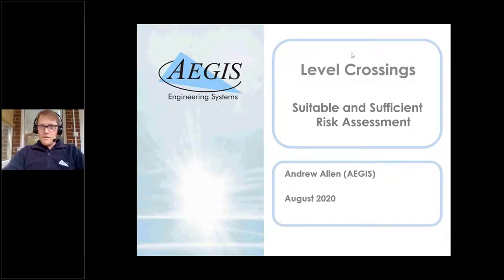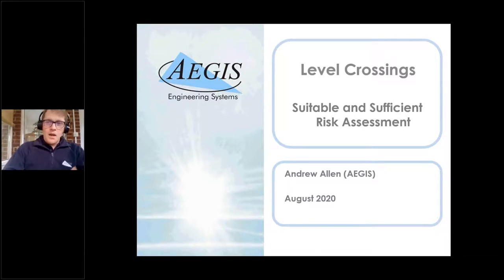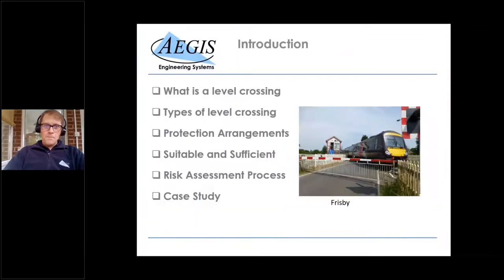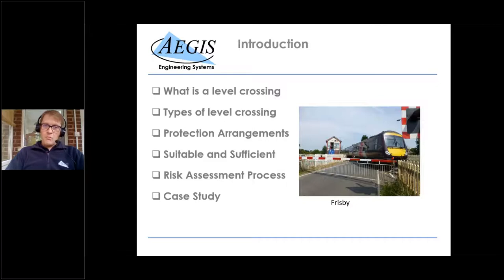Hello everybody. Obviously, hopefully you're all here to talk about level crossings — and I have an example level crossing here from a Brio train set. What we're going to talk about is suitable and sufficient risk assessment relating to level crossings: what is a level crossing, some different types, different protection arrangements, a definition of suitable and sufficient in terms of risk assessments, the Aegis risk assessment process, and then a case study.